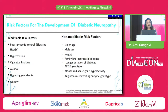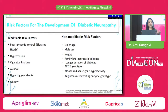Risk factors for diabetic neuropathy are either modifiable or non-modifiable. Modifiable factors include good glycemic control, hypertension correction, stopping cigarette smoking and alcohol, correcting hypertriglyceridemia and reducing weight. Non-modifiable factors include older age, male sex, height, family history of neuropathy, and APOA genotype among others.